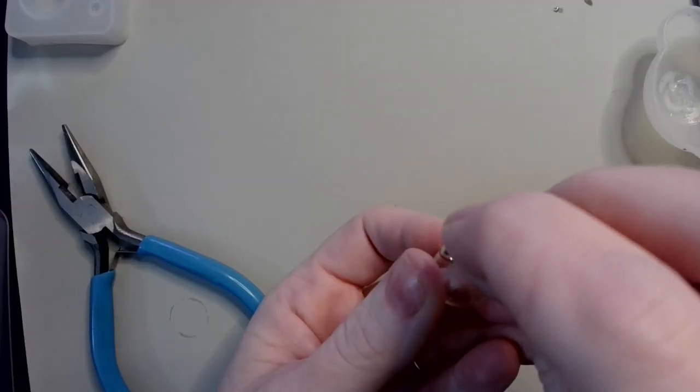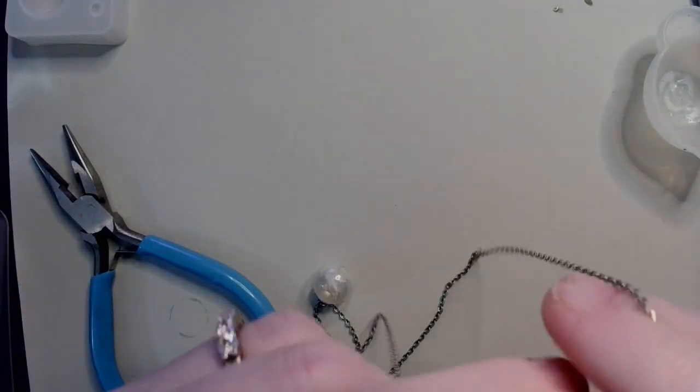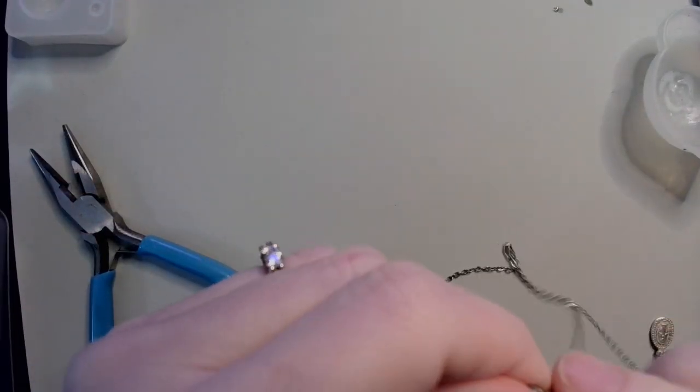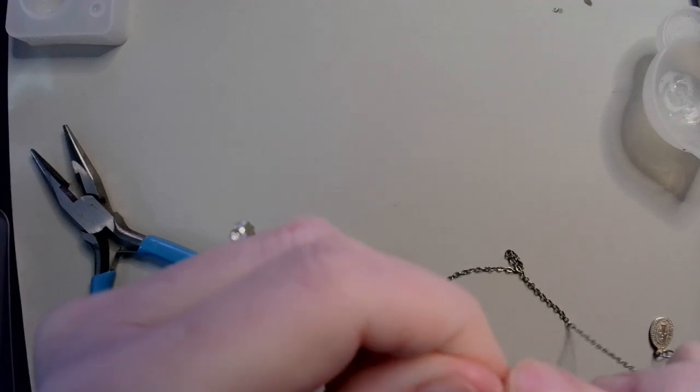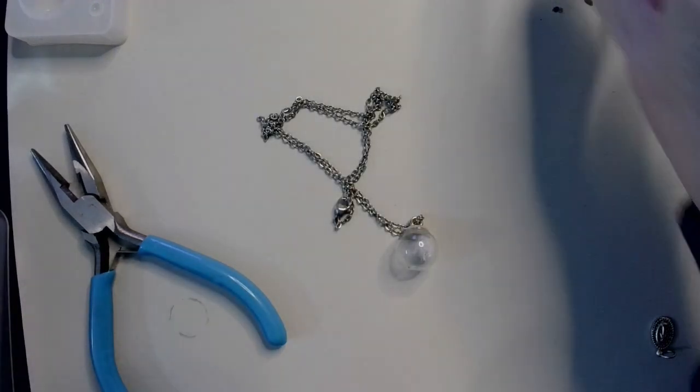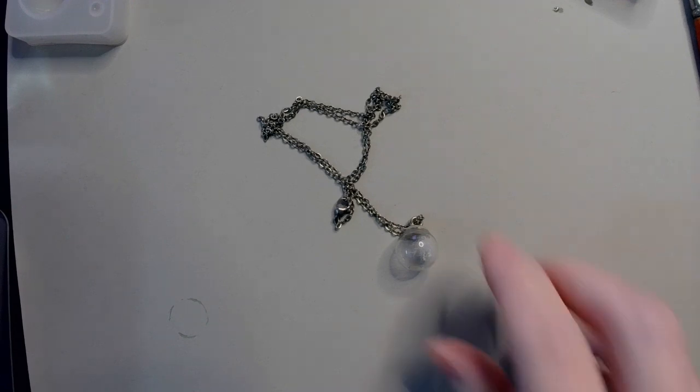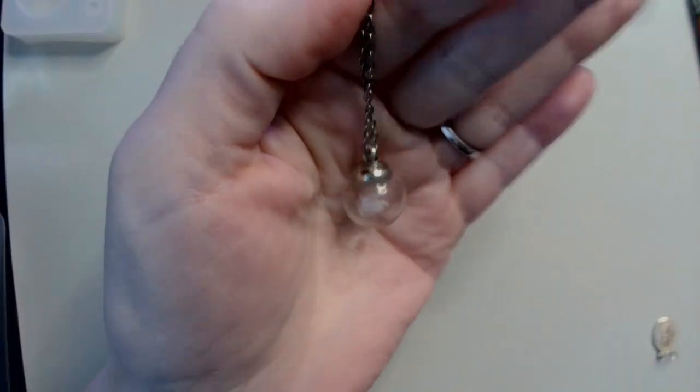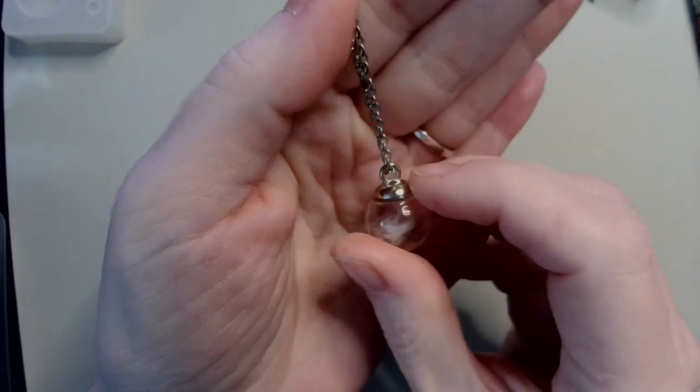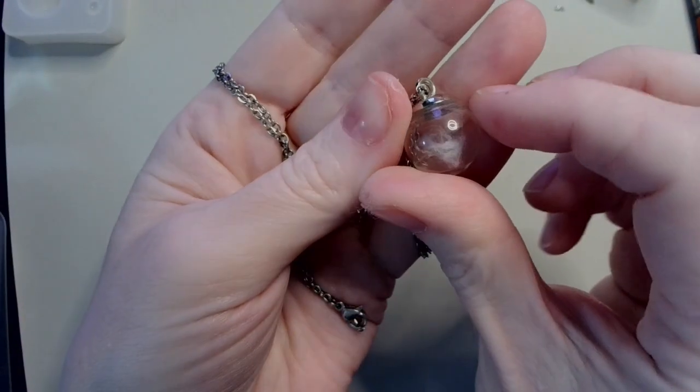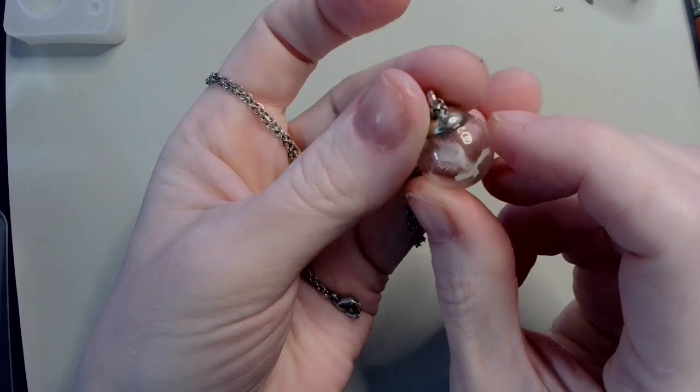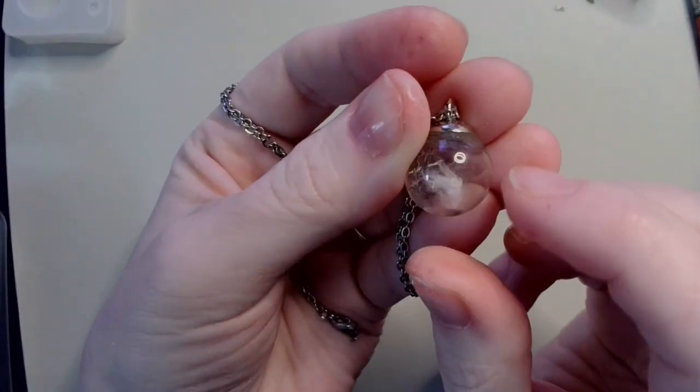So there we go and so we can thread it through. A ghost orb pendant. Quick, simple, it's been under 15 minutes and I've made something really cute, really adorable. You can give it to any of your friends who enjoy ghost hunting or Halloween in general or anything.